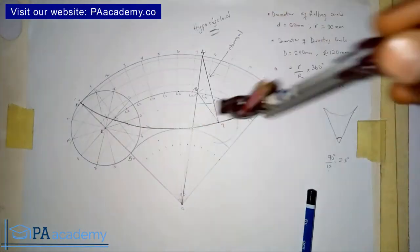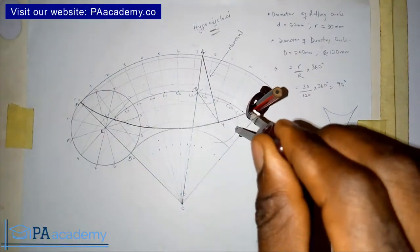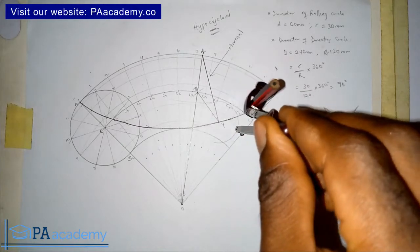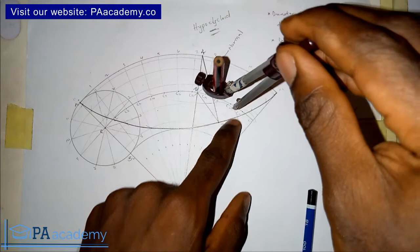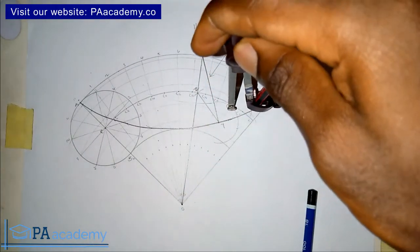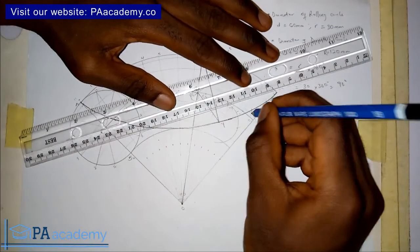So from these two arcs, we are going to draw another arc that will intersect. So you're going to be having something like this. So from your point of intersection, you are going to join it to Y. This is the point of intersection.